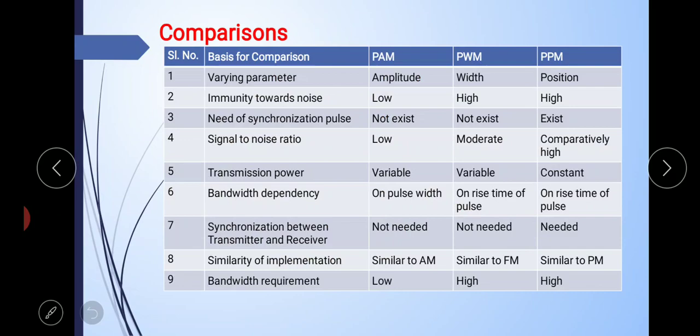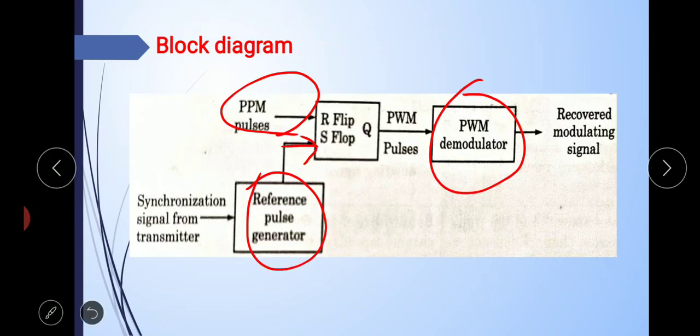The next point is the need for synchronization. In PAM and PWM, synchronization between transmitter and receiver is not required. But in the case of PPM, synchronization is required because the position of the pulses varies. So PPM requires synchronization between the transmitter and receiver sections. As seen in the block diagram, a synchronization signal is provided from the transmitter section to the receiver.